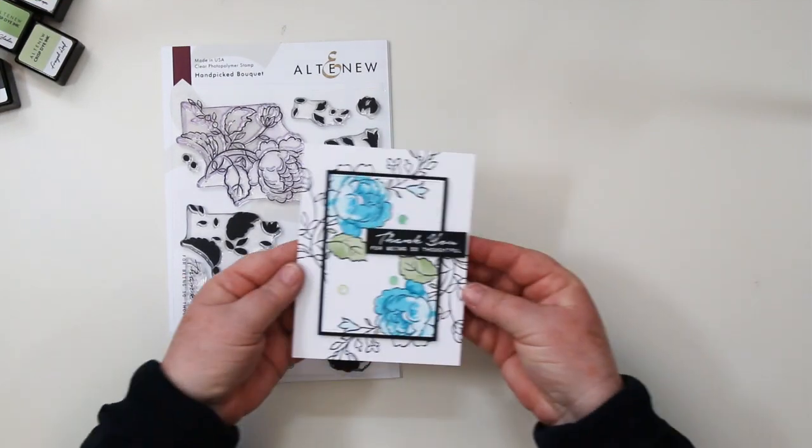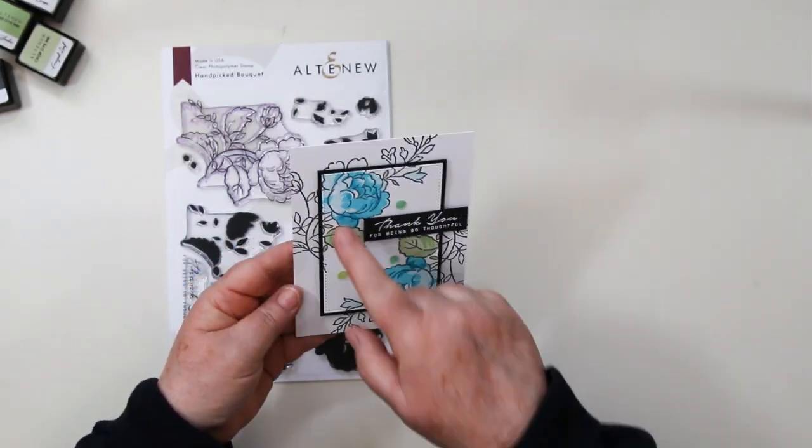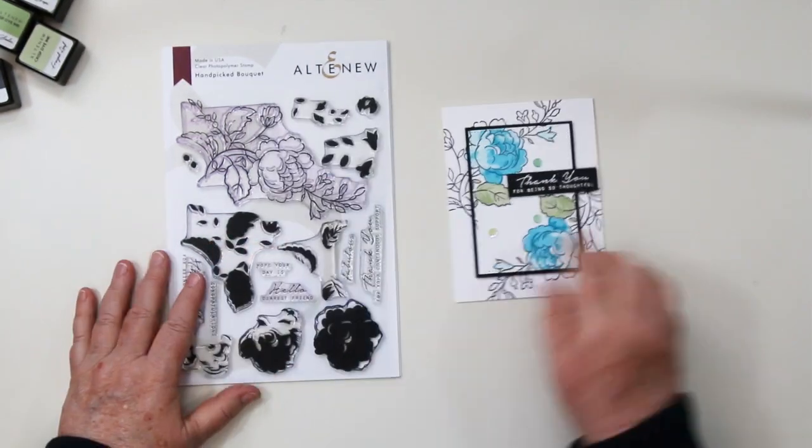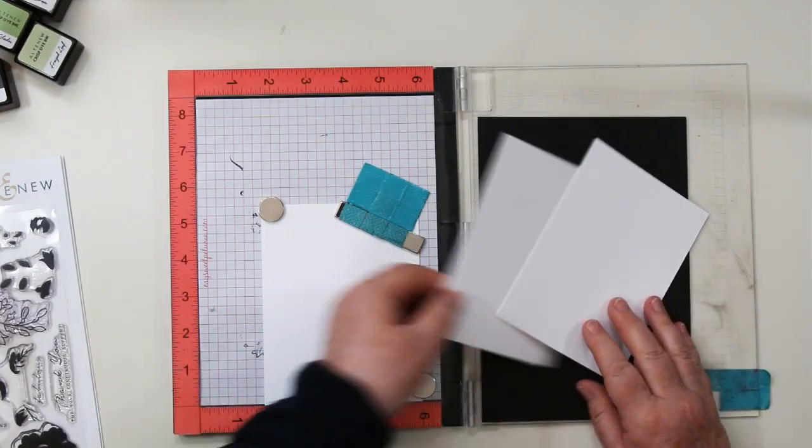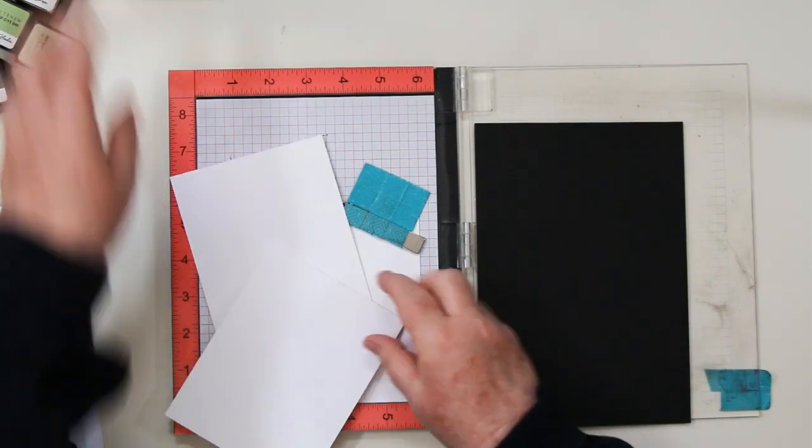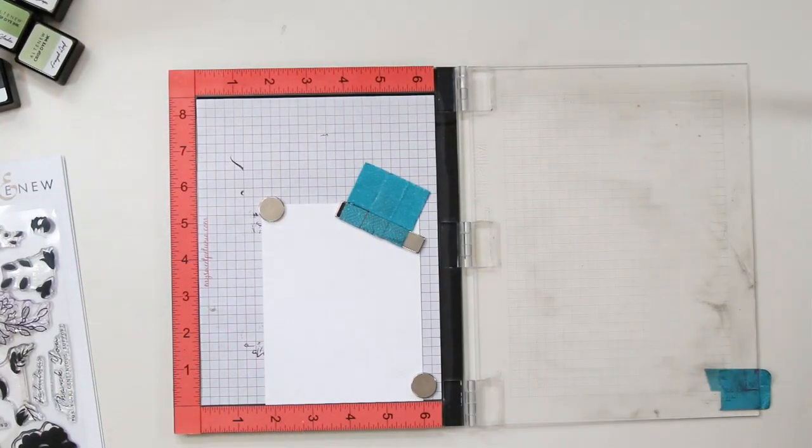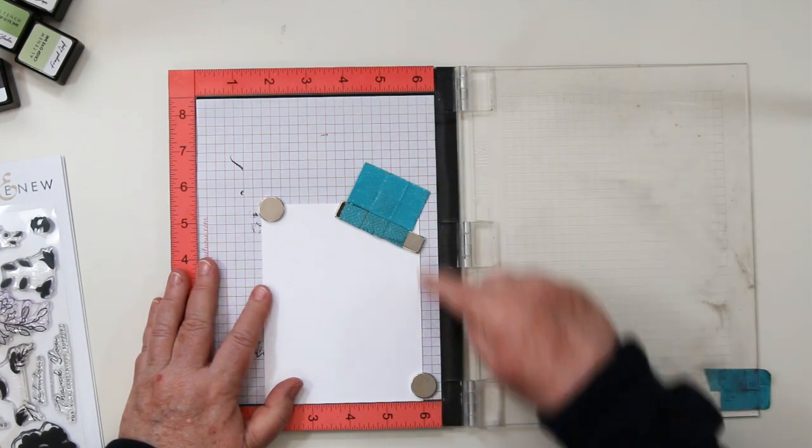Hey Stampin' friends, welcome back, it's Sandy here. Today I'm going to share with you the spotlight technique and also multi-layering stamping. I'm going to use the Misti and show you how to do the multi-layering double time because we're going to do it on both sides of one piece of paper.